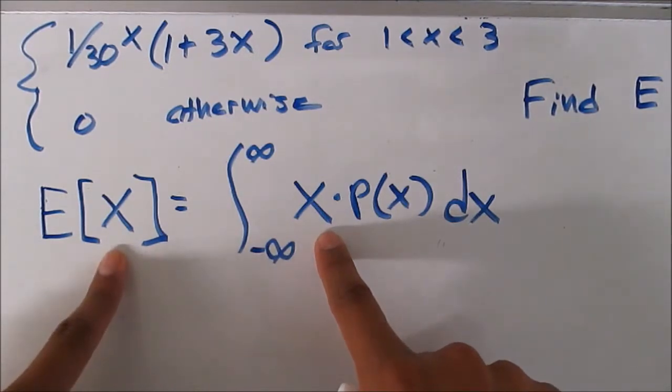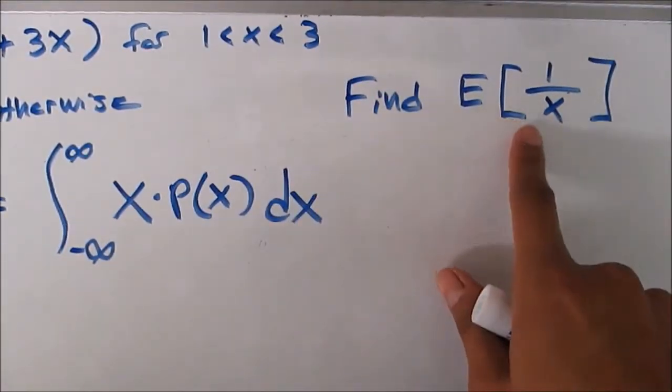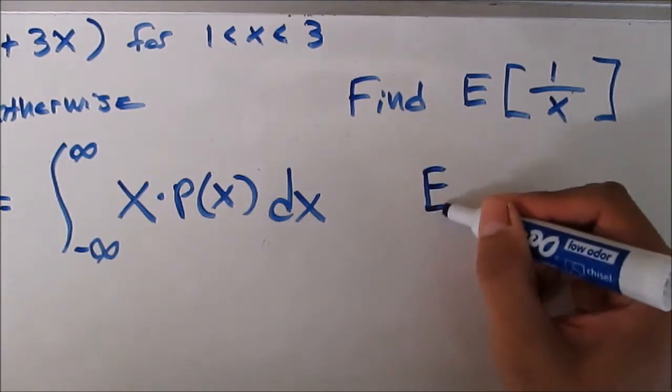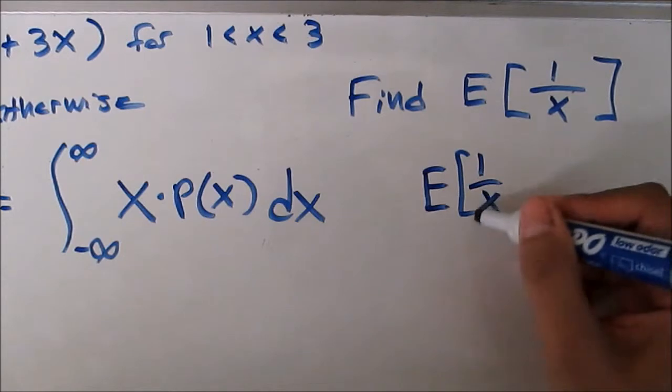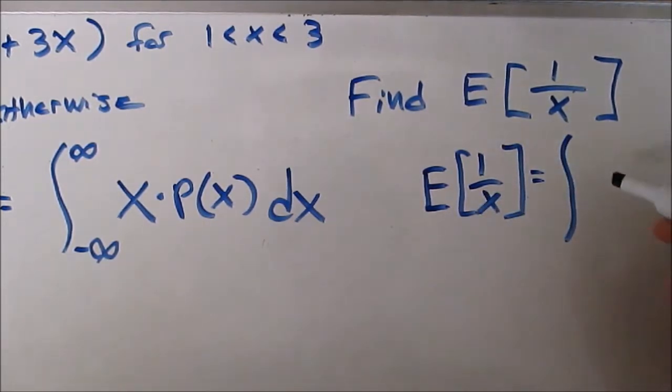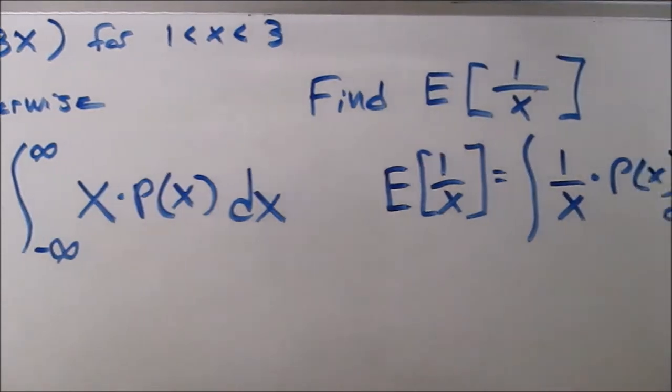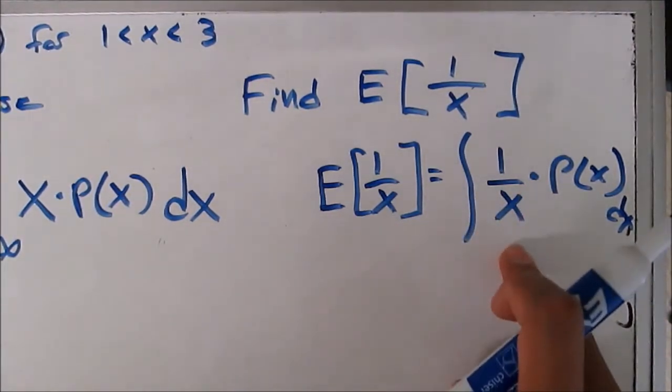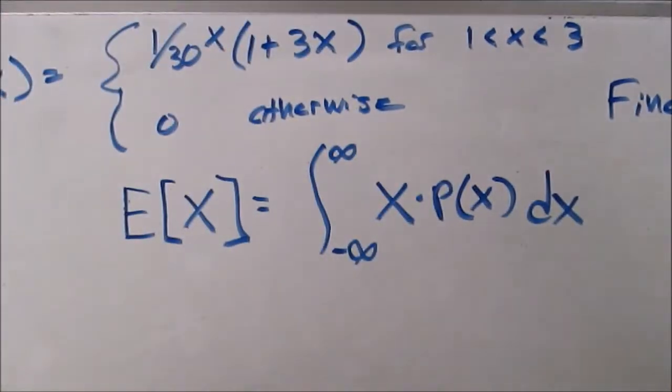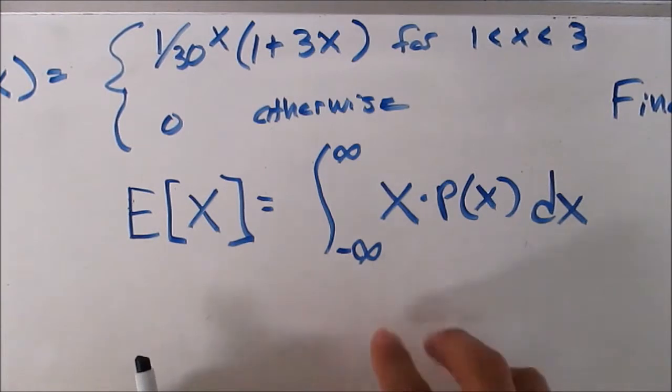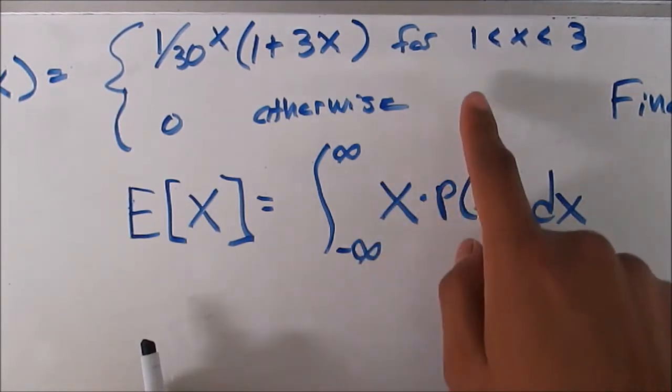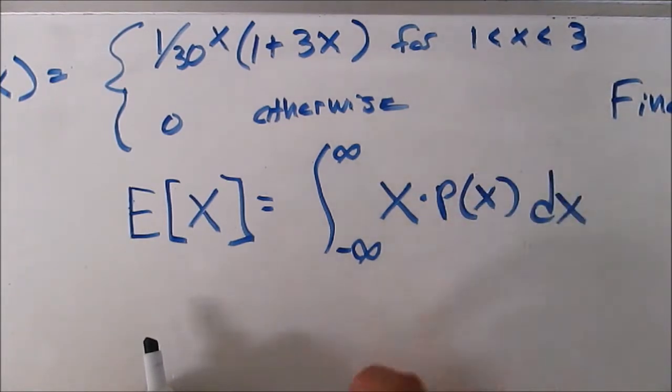We get it from this, but in this case the problem is saying find the expected value of 1 over x. So that changes the formula a little bit. So the expected value of 1 over x is equal to the integral of 1 over x times the probability of x and that's the only difference with respect to x. So now see how this goes in here because that's the value that we're looking for. Now back to this, remember that these do not represent negative infinity and positive infinity. They come to be this range here from 1 to 3.